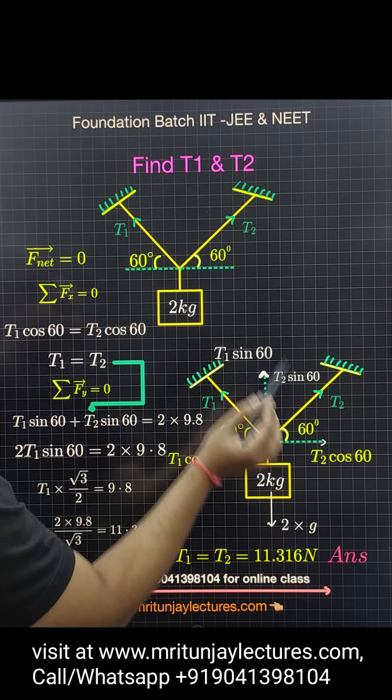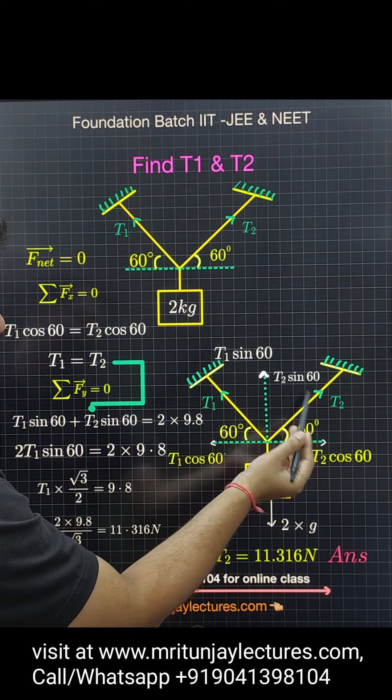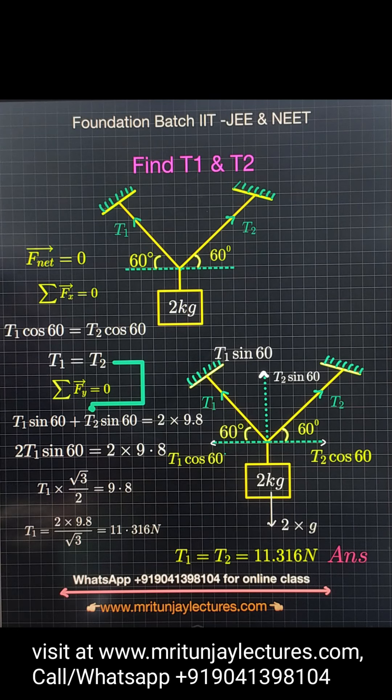is T1 sin 60 degrees. Similarly, the component of T2 along the x-axis is T2 cos 60 degrees, and the component of T2 along the y-axis is T2 sin 60 degrees.